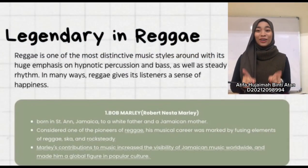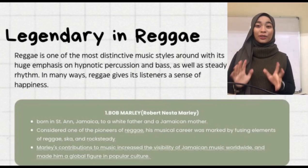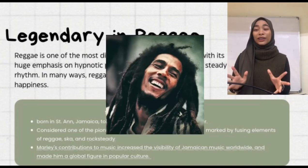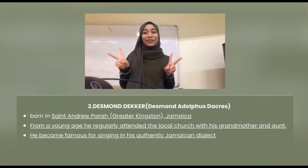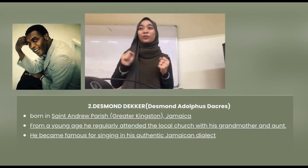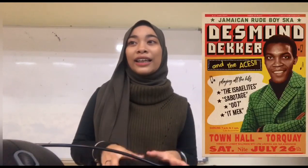Greetings to all, my name is Atifa. Now I'm going to present my point about legends in reggae. The first person is Bob Marley, who is considered a pioneer of reggae. He started his success with reggae band Bob Marley and the Wailers, which was formed in the early 1960s. Bob Marley and the Wailers were prolific in producing music throughout the 60s and 70s. Even after his passing, his name remains synonymous with reggae, a testament to the brilliance of his music and impact on the music world. Moving to the second person, Desmond Dekker, one of the earliest mainstream stars in reggae. He is famous for singing in his authentic Jamaican dialect on classics such as It Mek and Israelites, and he was instrumental in introducing rude boy culture to Britain.